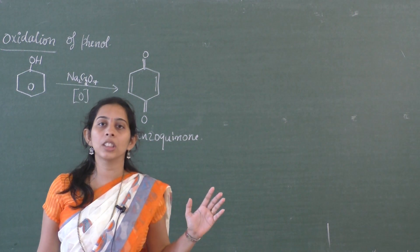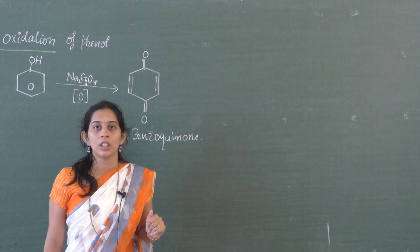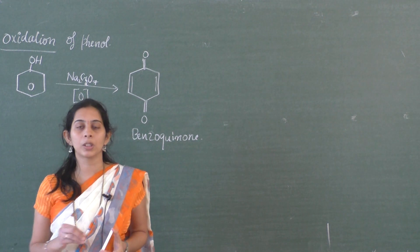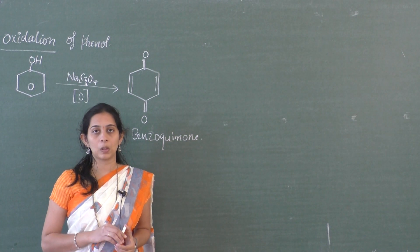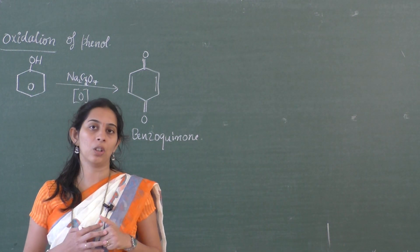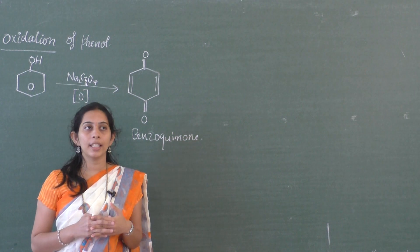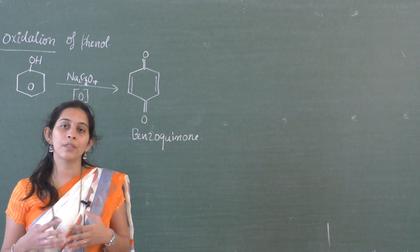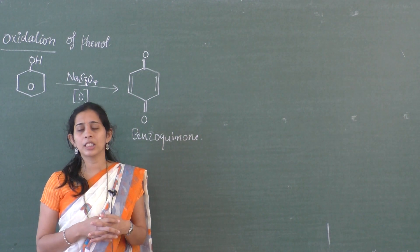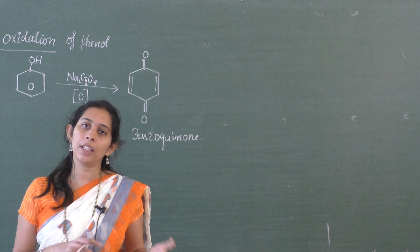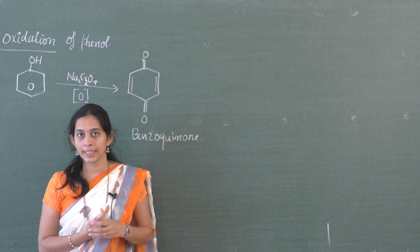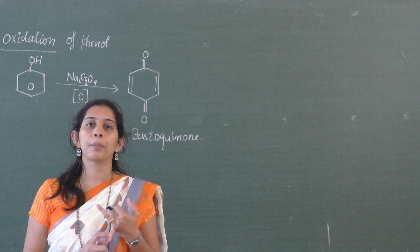These are all the reactions which involve phenol. Now we need to know about some commercially important alcohols. Mainly methanol and ethanol are the two commercially important alcohols. Methanol is also called wood spirit. Methanol is prepared by mixing carbon monoxide with H2O, and that is the method of preparation of methanol.